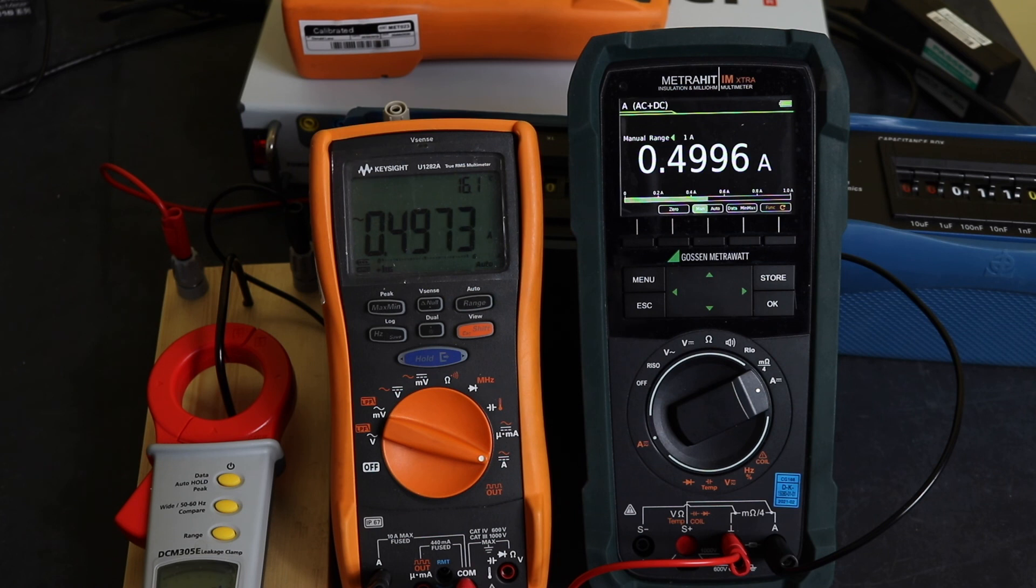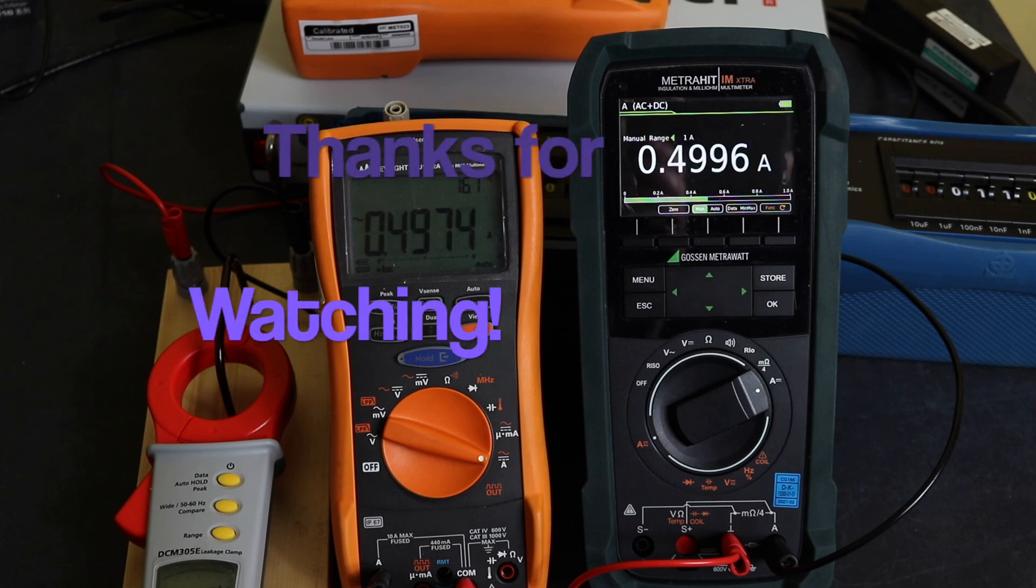I think at this point I'm going to call it for this video and go away and have a think and try and get my Fluke fixed, so that will give me the option of improving the accuracy of the measurements. I do have another methodology that I'm working on that is much cheaper at making the measurements on these earth leakage clamps than this method I've currently got, because I appreciate not everybody has an injection test set available to them. So yeah, I think that's it. Thanks for watching the video. I hope you found it useful, and I'll see you again in the next one.